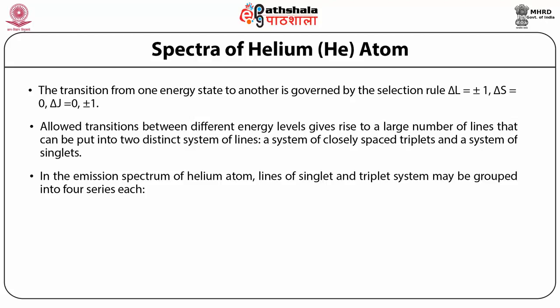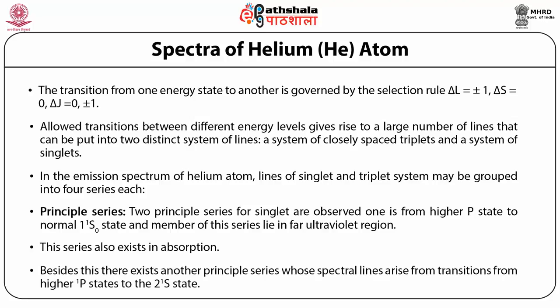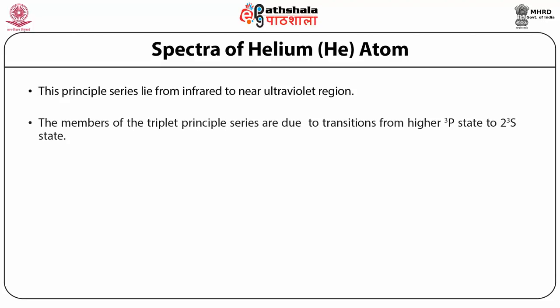In the emission spectrum of helium, lines of singlet and triplet systems can be grouped into four series each: principal series, sharp series, diffuse series, and fundamental series. Two principal series for singlets are observed — one from higher ¹P states to the 1¹S0 ground state lying in the far ultraviolet (also exists in absorption), and another from higher ¹P states to the 2¹S state lying from infrared to near ultraviolet. The triplet principal series arises from transitions from higher ³P states to 2³S, lying from infrared to ultraviolet.